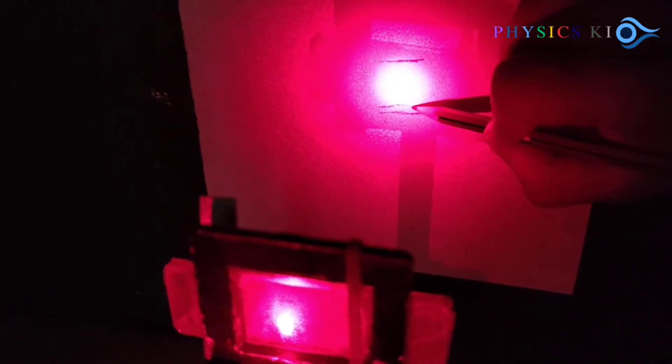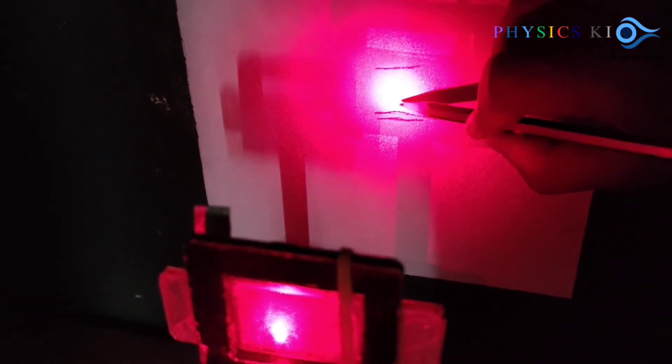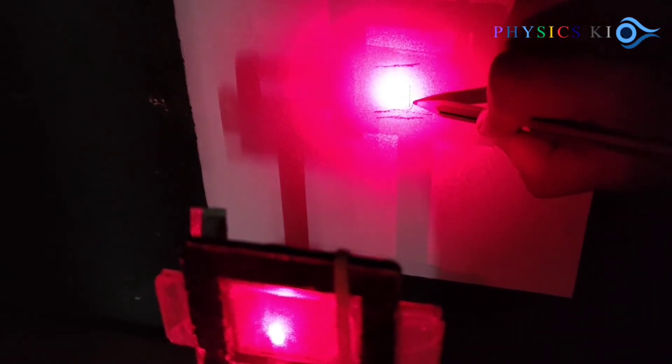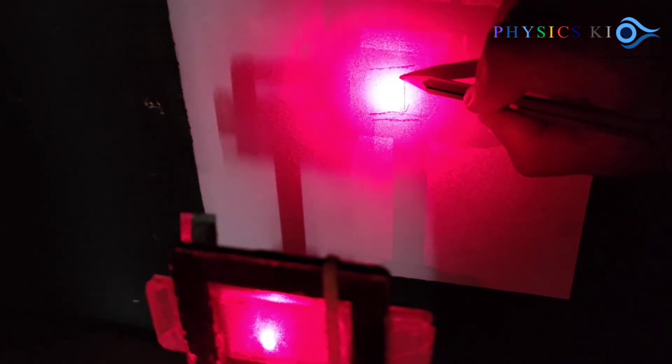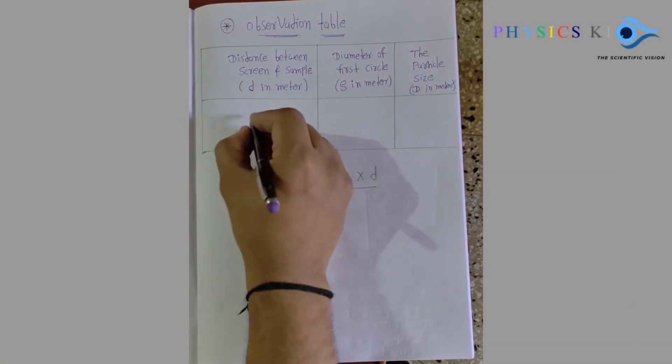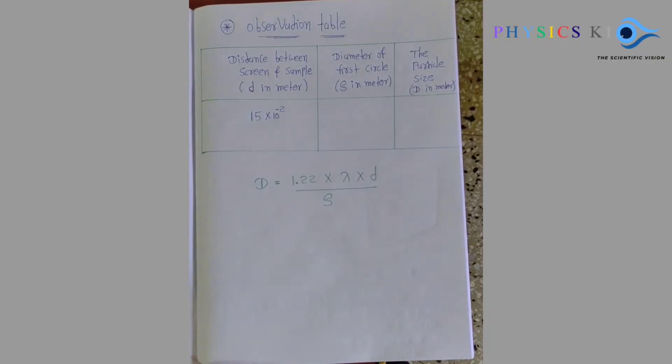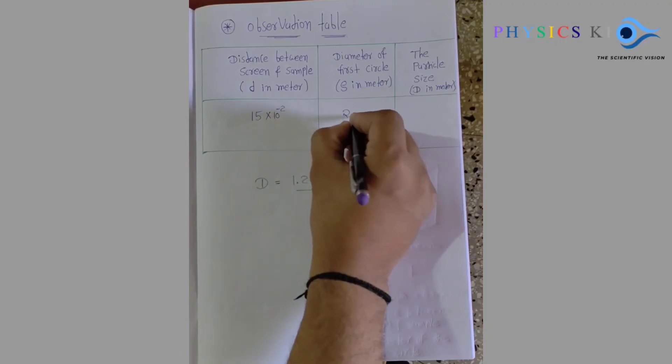And I already arranged the distance between sample and screen - it is 15 centimeter. So I am measuring the diameter of this circle, and this one is our actual figure and the distance is 2.4 centimeter. So I am noting distance between sample and screen is 15 centimeter, which is equal to 15 into 10 to the power minus 2 meter.